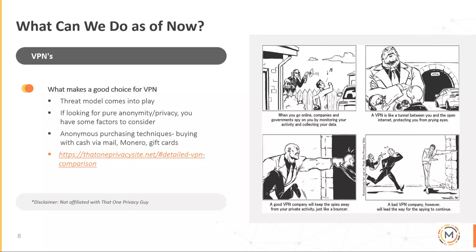Certain VPN providers allow accepting payment by cash via the mail. You create a profile through the site, they give you a subscription number, you put their address on an envelope with just that numeric code — nothing else attached to you — and send it through the mail. You can also buy it with Monero or use gift cards. Of course, if you're trying to do that anonymously, you'd be paying cash, and if you're really worried about your level of anonymity, you also want to make sure facial recognition at the place you're buying those gift cards is dissipated.